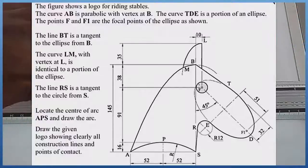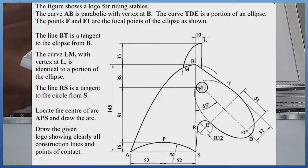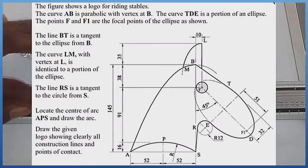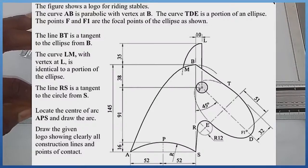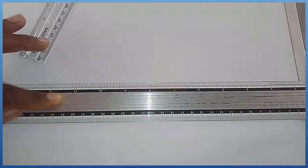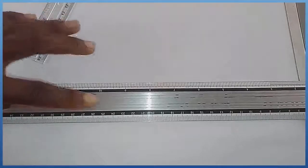Welcome to this construction class. We will be looking at the construction of a logo for riding steams. Point A-B is actually half part of a parabola, and we are going to construct that.